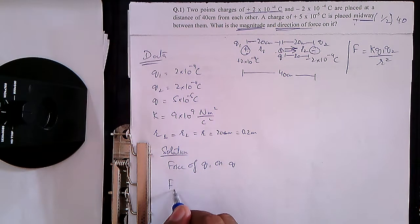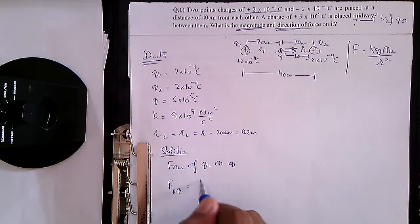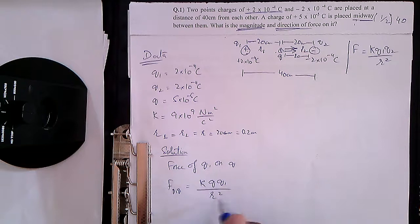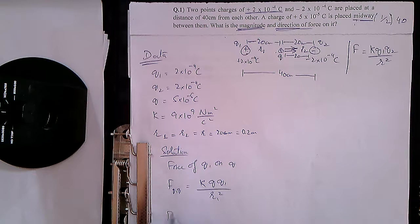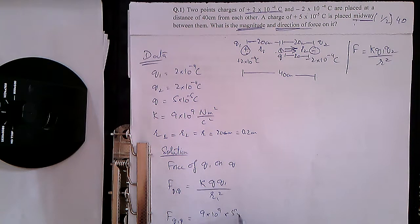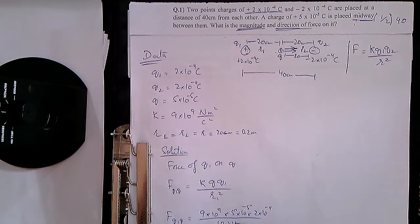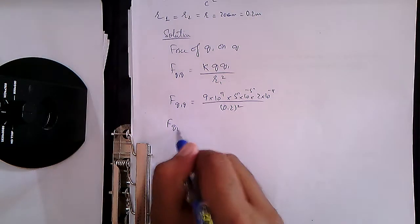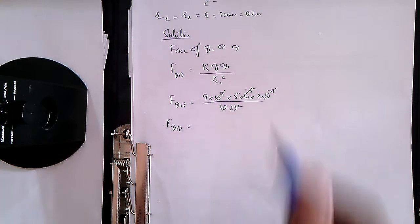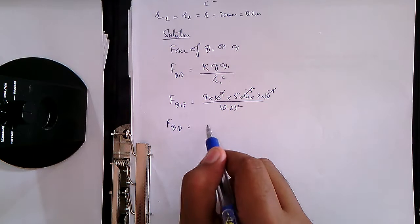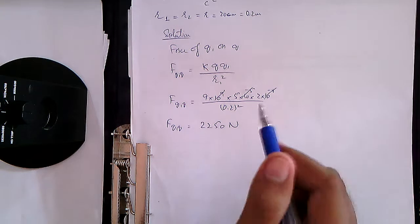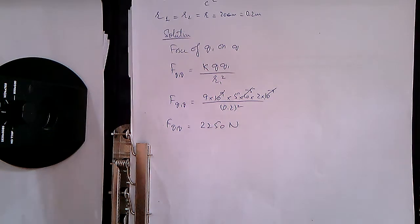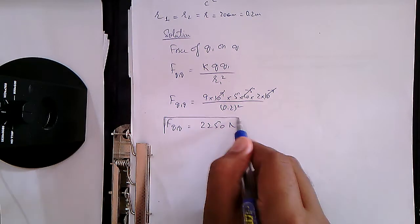Let's begin with the solution. First, write: Force of Q1 on Q. The formula is F(Q1,Q) = K × Q × Q1 / R1². Substituting values: F = 9×10⁹ × 5×10⁻⁵ × 2×10⁻⁴ / (0.2)². After solving, the answer is 2250 Newtons. This is a repulsive force since both charges are positive.